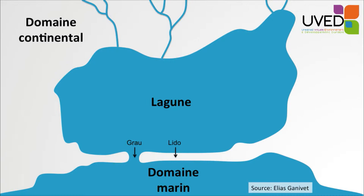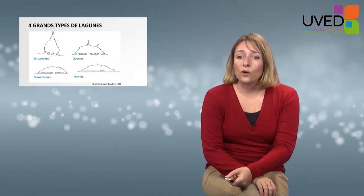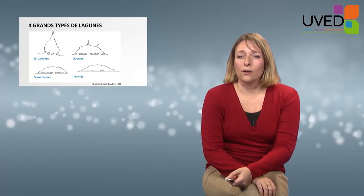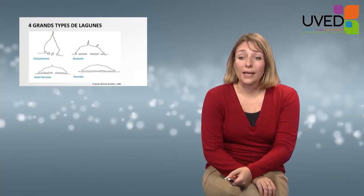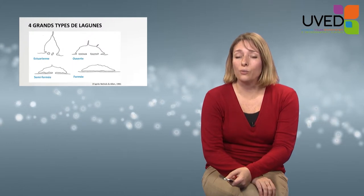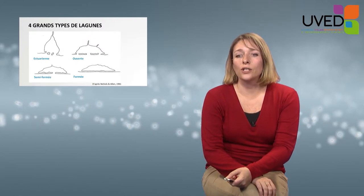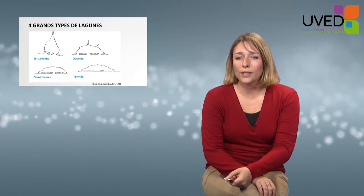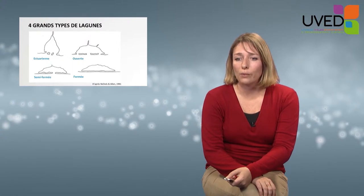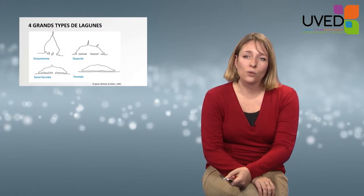They are separated from the sea by a stretch of sand and pebble, and this stretch is called the Lido, and there are passes opening towards the ocean or the sea. Depending on the number of passes and the intensity of exchange with the ocean environment, there are four different types of lagoons.